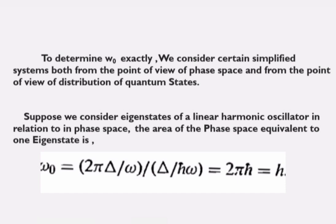Here, the delta and omega terms cancel, leaving us with 2π ħ. Since ħ equals h over 2π, the 2π cancels out, giving us Ω₀ = h. So the result of this derivation is that Ω₀ is equal to h.